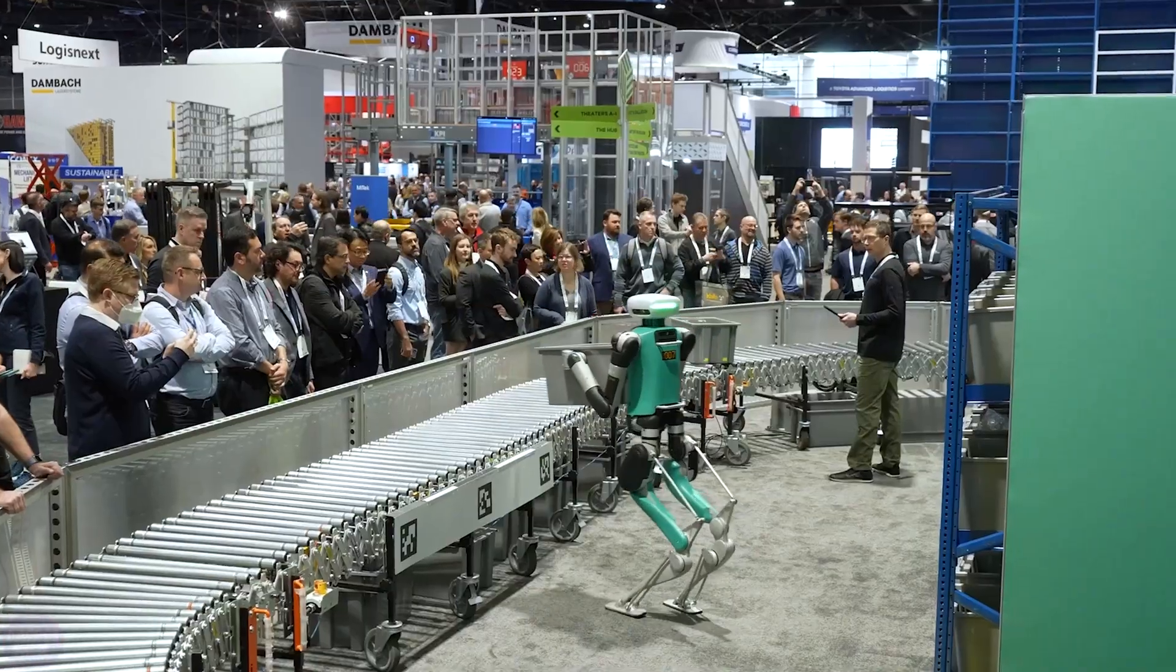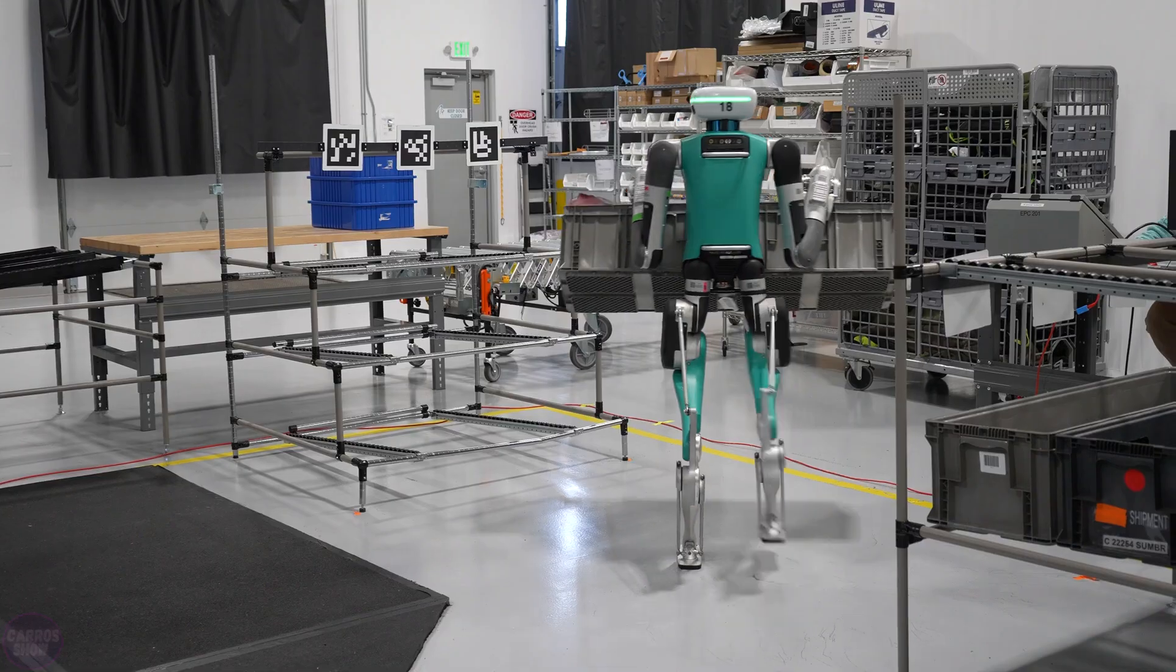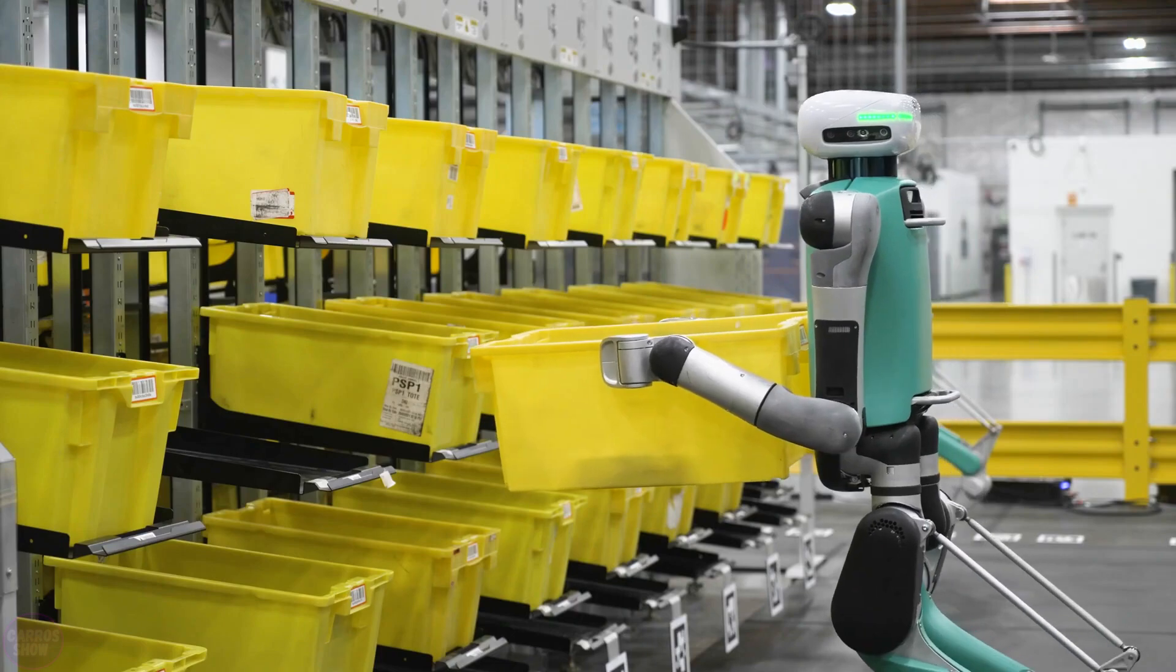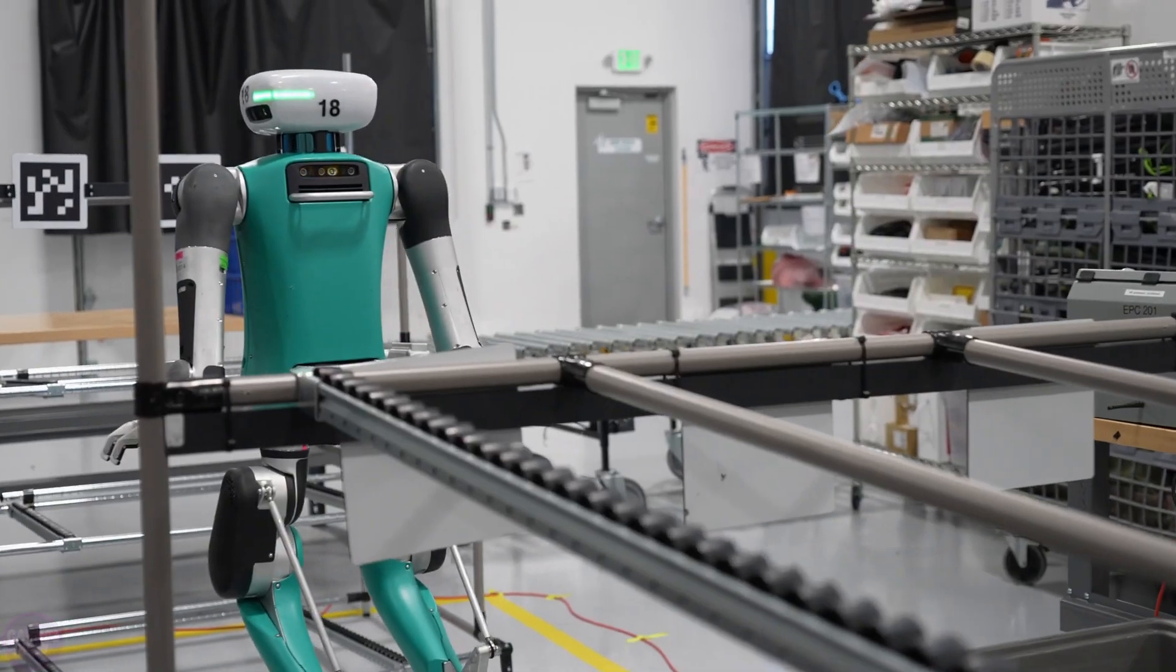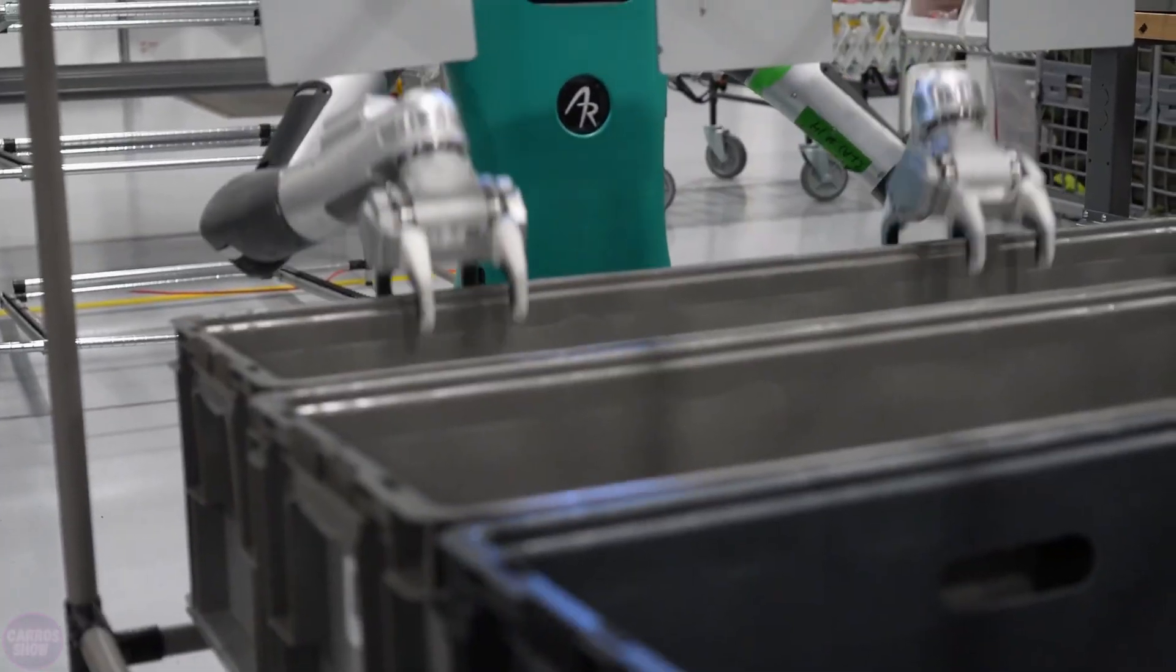Digit can climb stairs, navigate obstacles, and work in human spaces, such as warehouses, where the infrastructure is designed for people. Legs provide the robot with flexibility and the ability to perform various tasks in environments intended for humans.